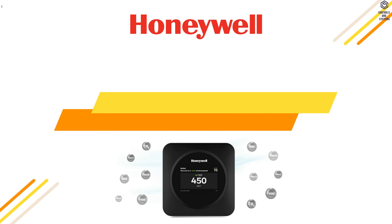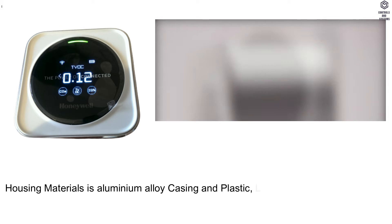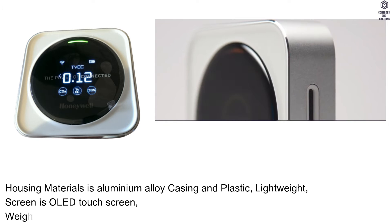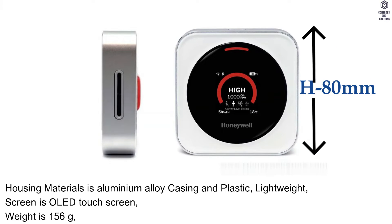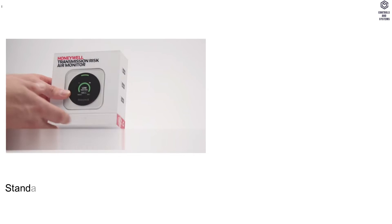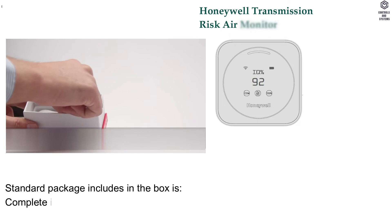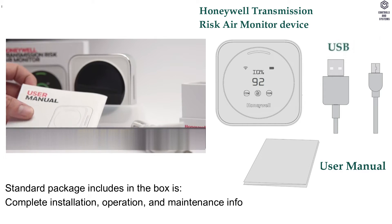Material data: housing material is aluminium alloy casing and plastic, lightweight. Screen is OLED touchscreen. Weight is 156 grams. Dimensions: height 80 mm, width 80 mm, depth 22 mm. Standard package includes: Honeywell Transmission Risk Air Monitor device, user manual, and USB cable.